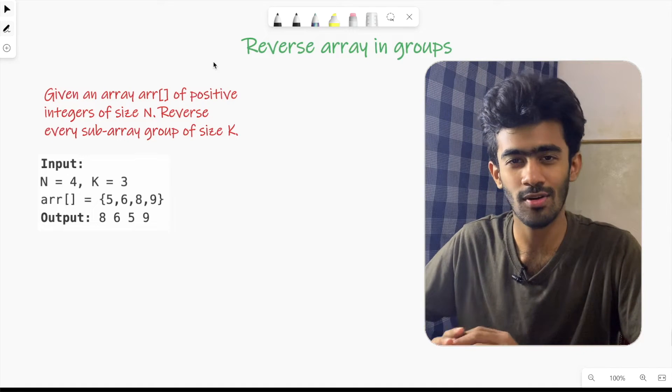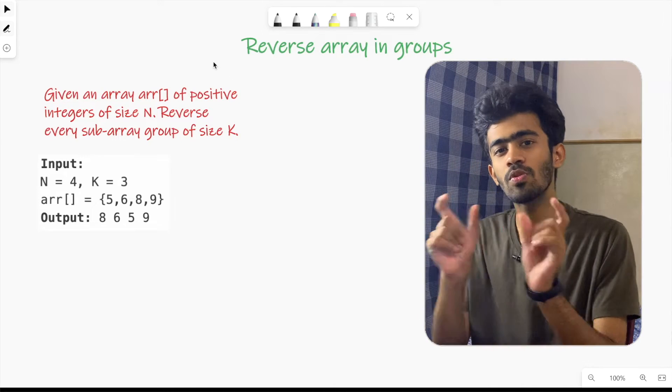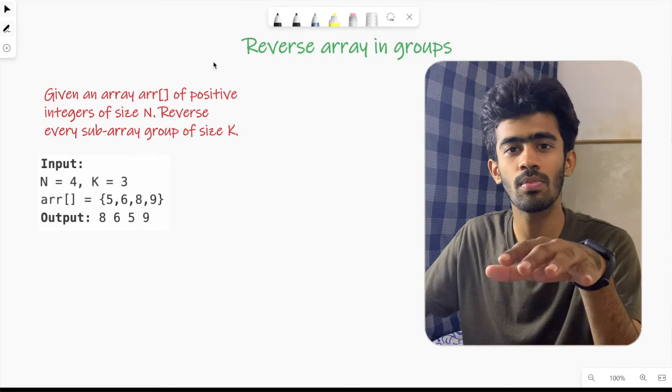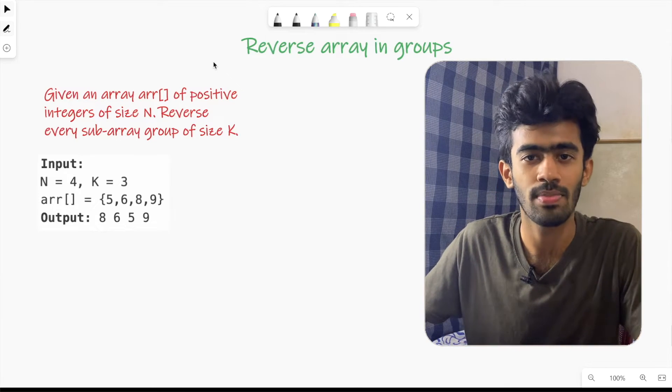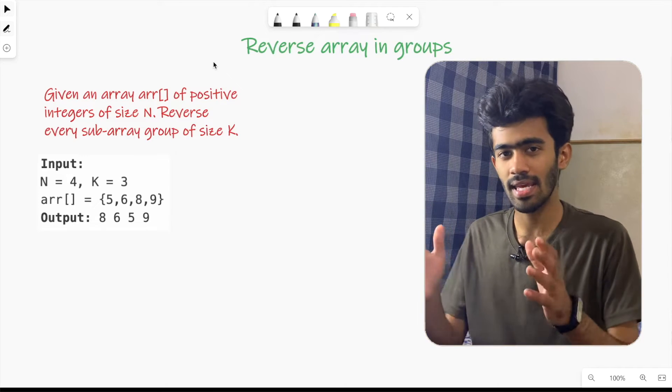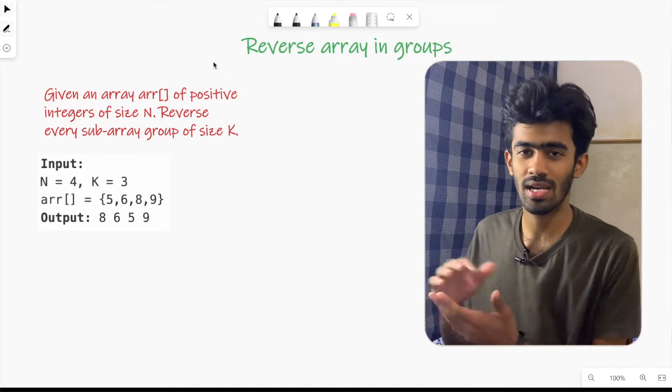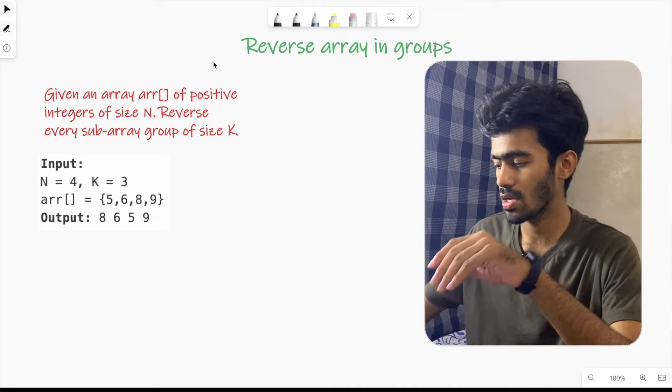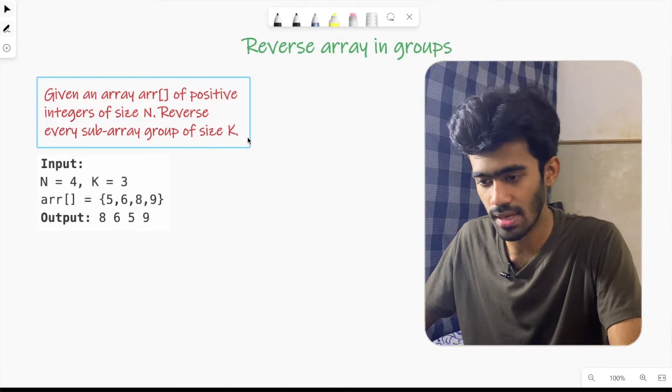In this question, what do we get? There is an array. We need to reverse it. The question is: given an array of positive integers of size N, reverse every subarray group of size K. This is the question.